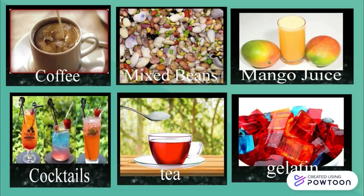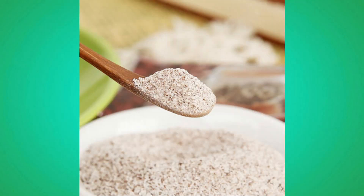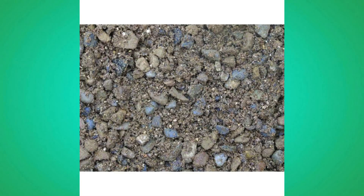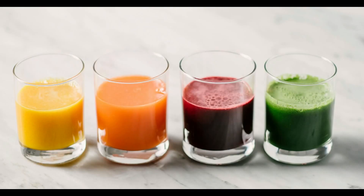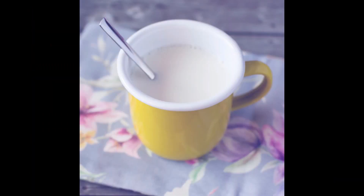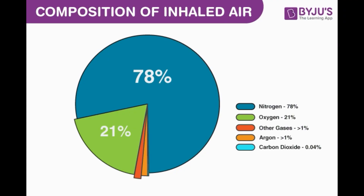A mixture can come in any form. It may be solid, liquid, or in gaseous form. Fruit salad, 3-in-1 coffee powder, chicken breading, and mixed gravel are examples of solid mixtures. Fruit juice drink, hot coffee, hot chocolate drink, and hot milk are liquid mixtures. Air is a gaseous mixture. Air is made up of 78% nitrogen, 21% oxygen, and only 1% are other gases such as argon and carbon dioxide.